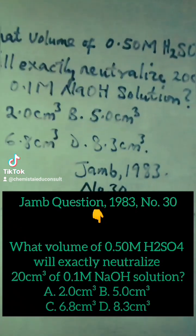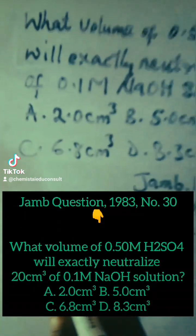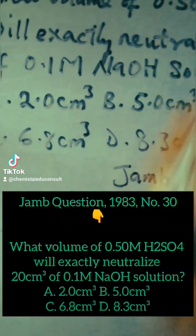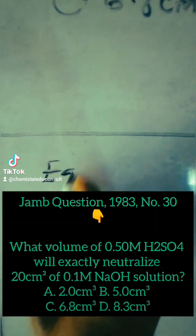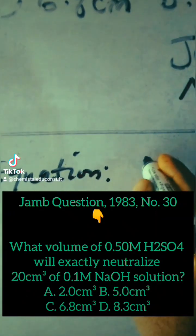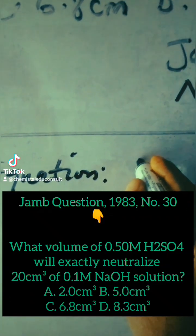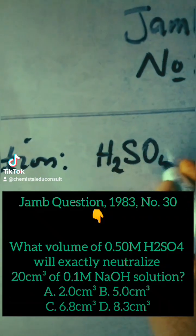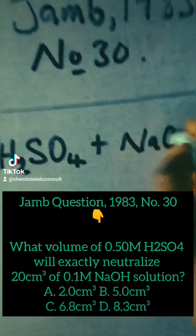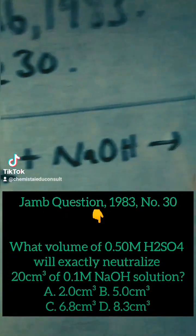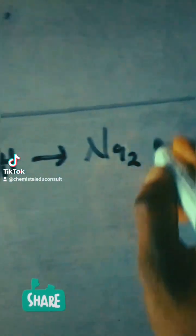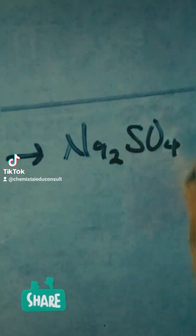First of all, we write the equation of reaction. The equation of reaction is where sulfuric acid (H2SO4) reacts with sodium hydroxide (NaOH). The products are sodium sulfate (Na2SO4) and water (H2O).